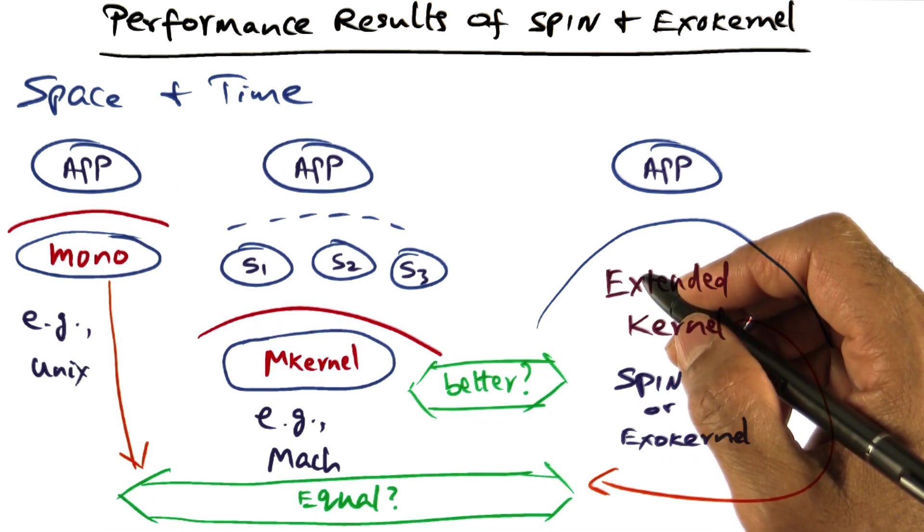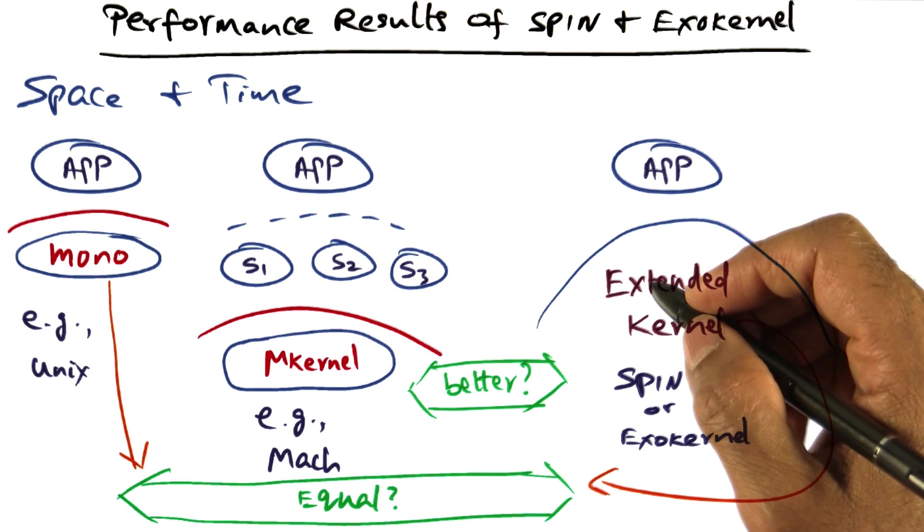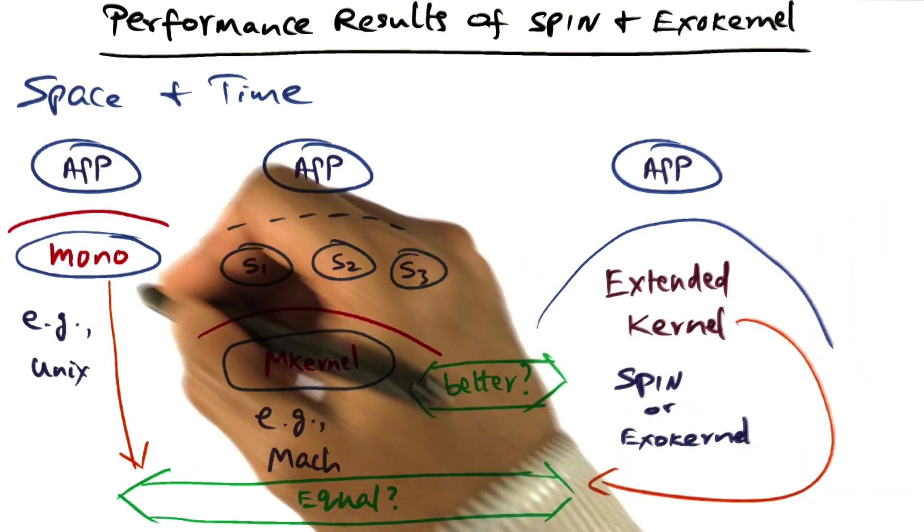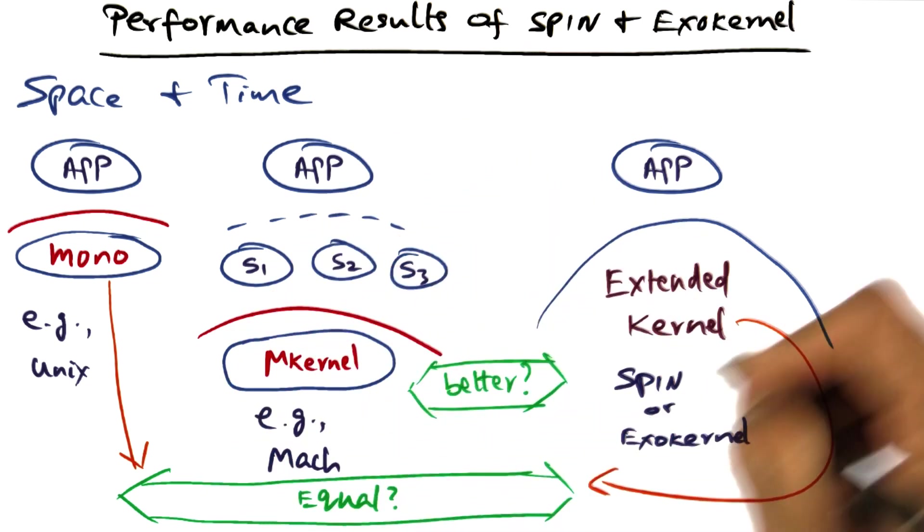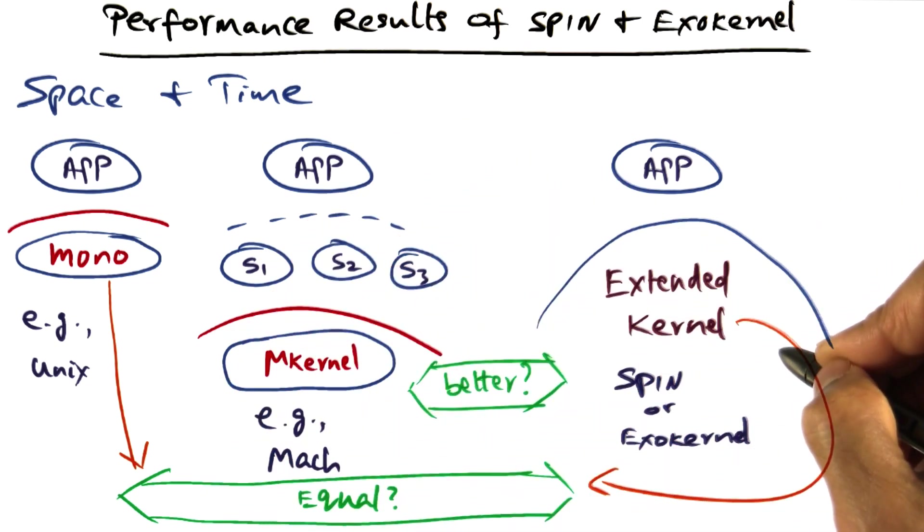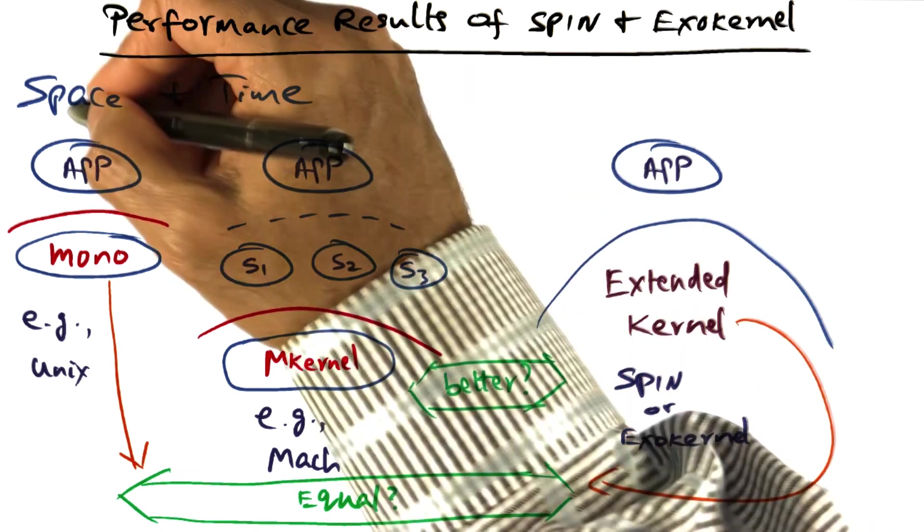What is the code size of implementing a standard operating system, say Unix, as a monolithic operating system or a microkernel based operating system or an extended kernel operating system? So that's the space question.